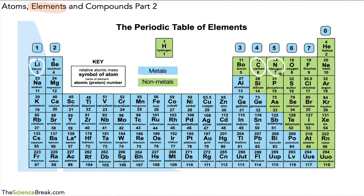We're going to look at how we write elements when we write them as symbols. The first thing is that we always use either one or two letters in the symbol for elements. We'll look at a few examples and then work out how they function when put into compounds.